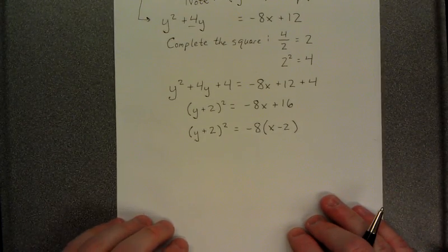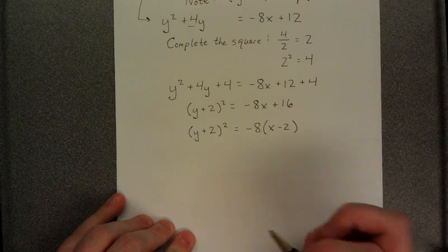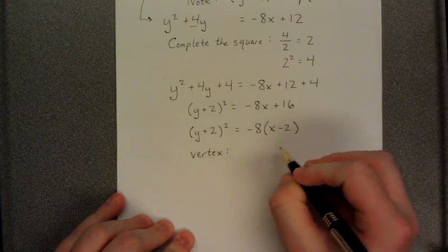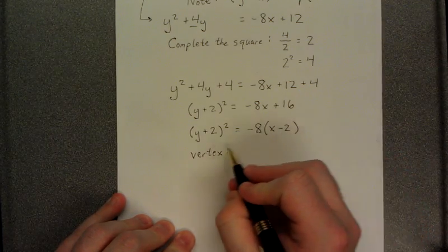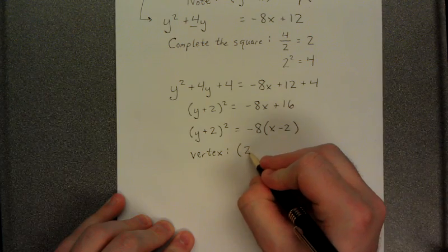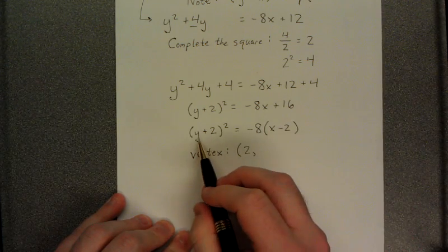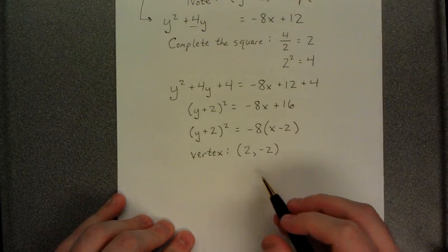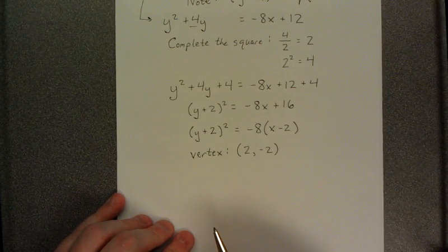Now that we've completed our standard form for the parabola, we can identify the vertex based on the number that has been subtracted from the x and subtracted from the y. The number subtracted from x would be positive 2, and the number subtracted from y would be negative 2. So the vertex is going to occur at 2, negative 2.